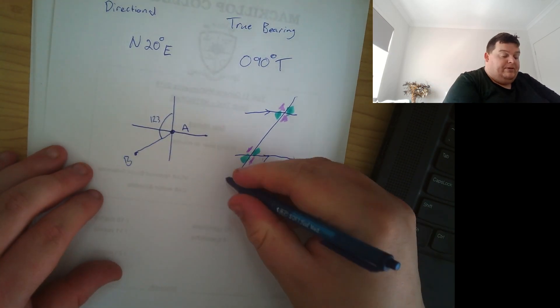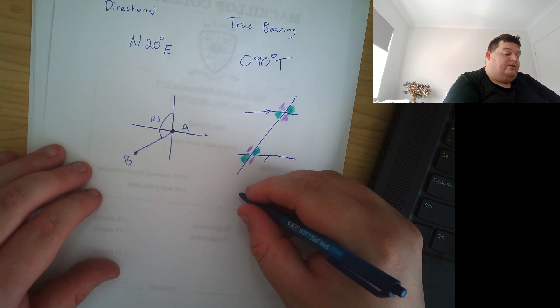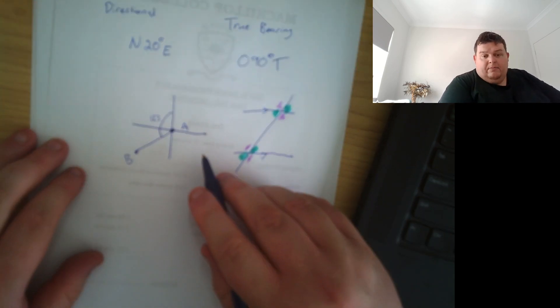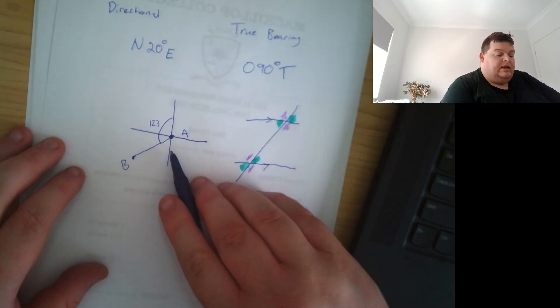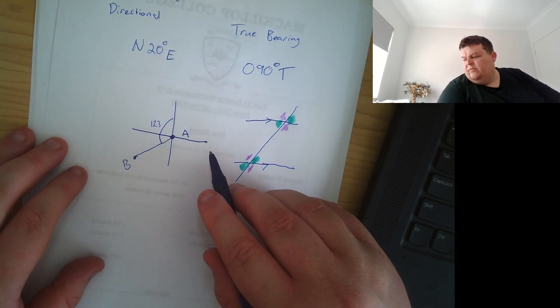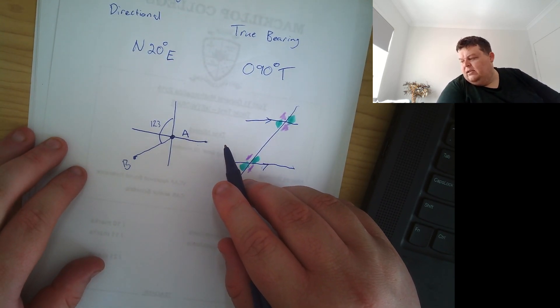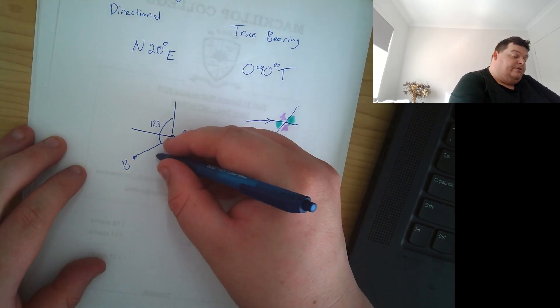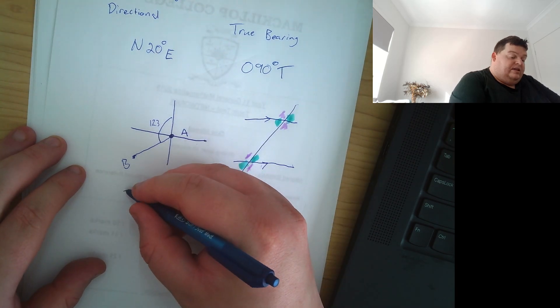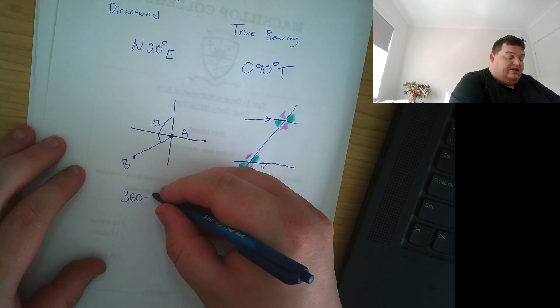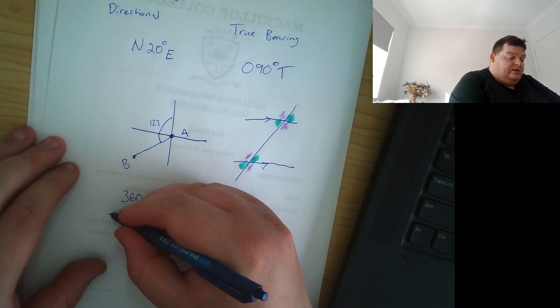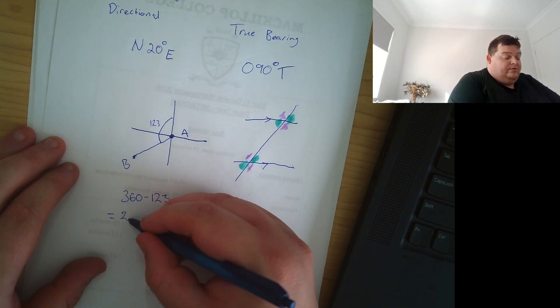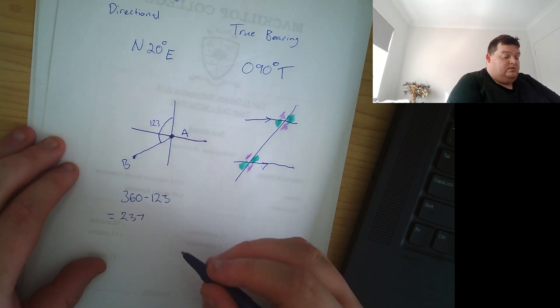You also need to know like complementary and supplementary angles which is like, does it add up to 180? So with that in mind, if I wanted to find the true bearing of town A to town B, which means I need to, I want to know this bearing here. Nice and easy. It's just 360 minus 123 degrees which will give me 237 degrees true.